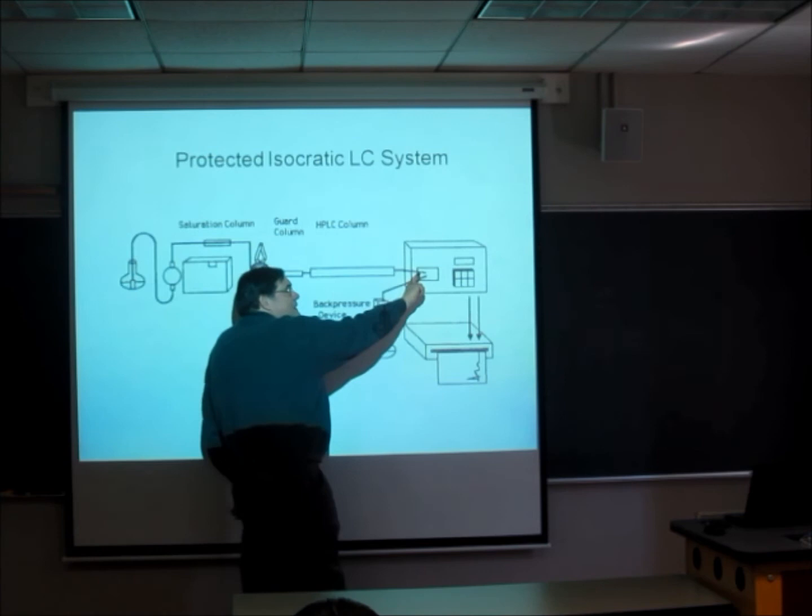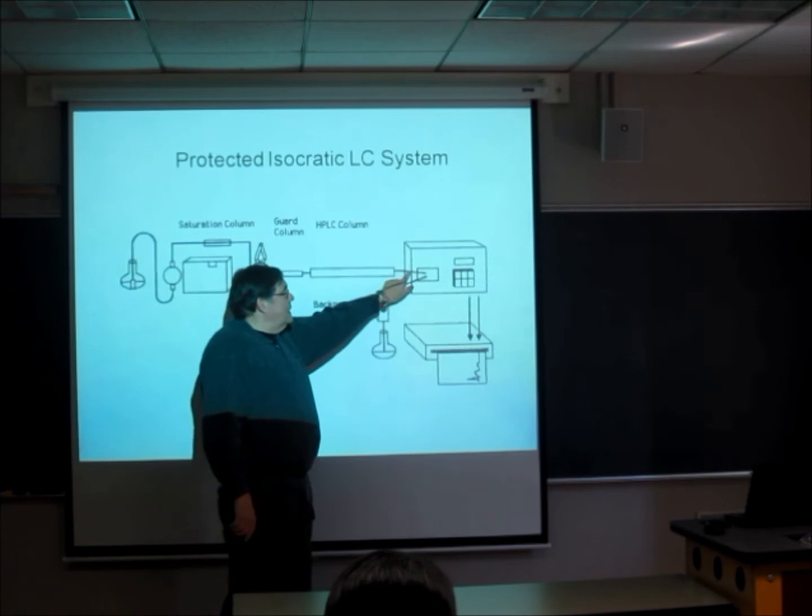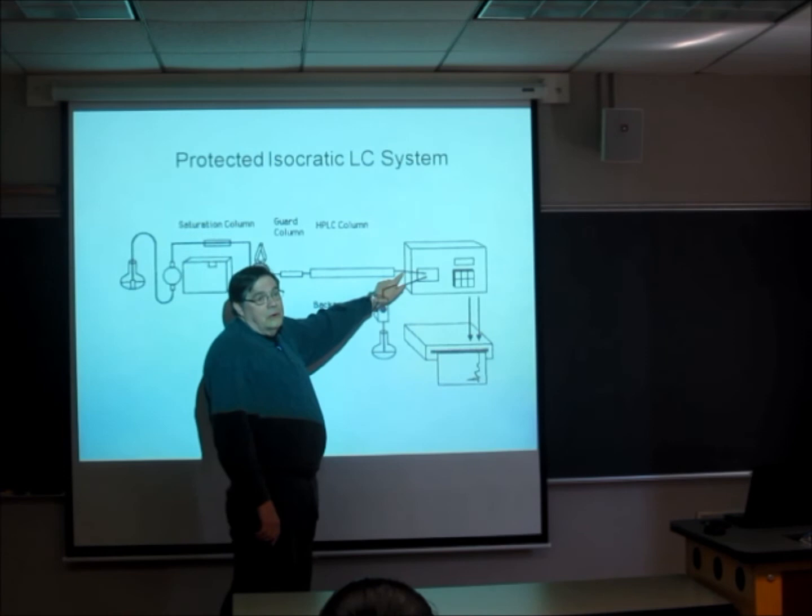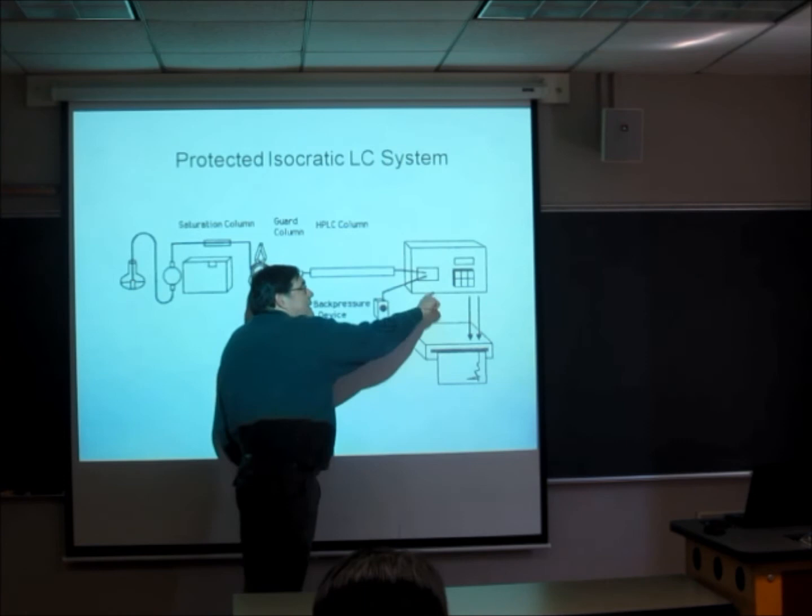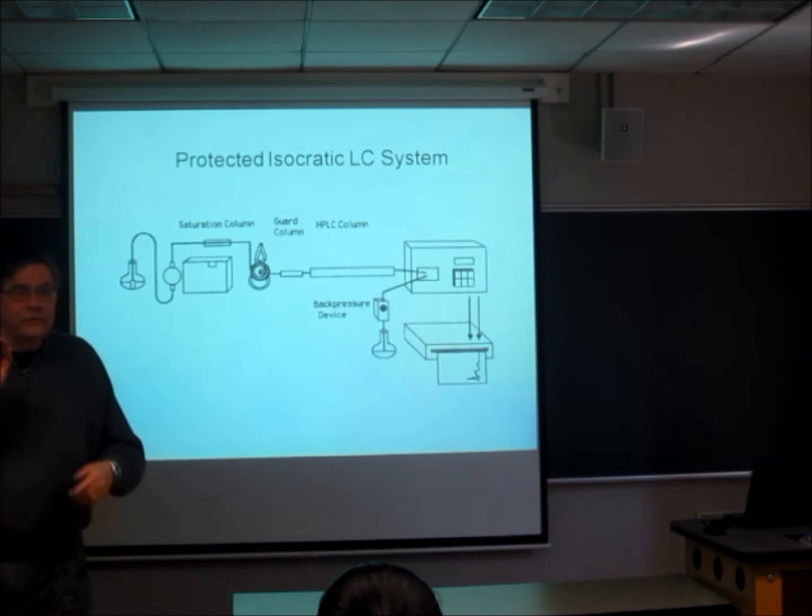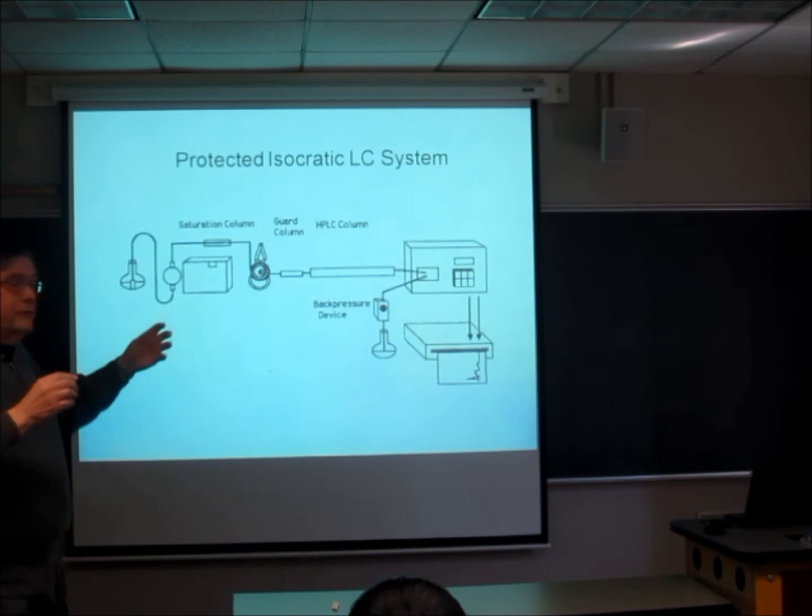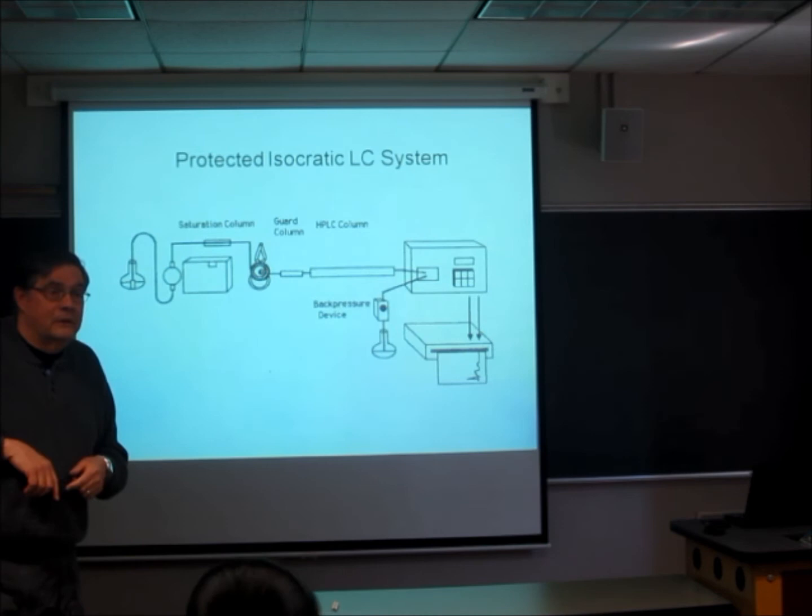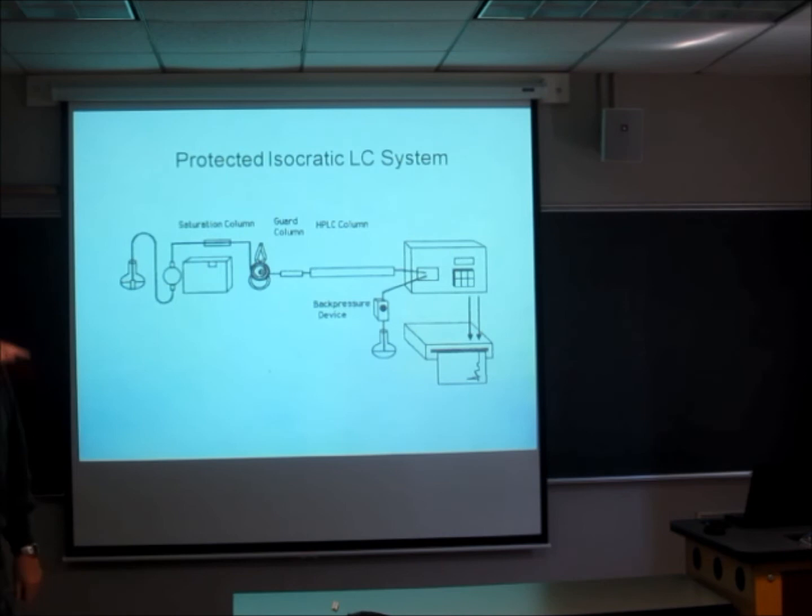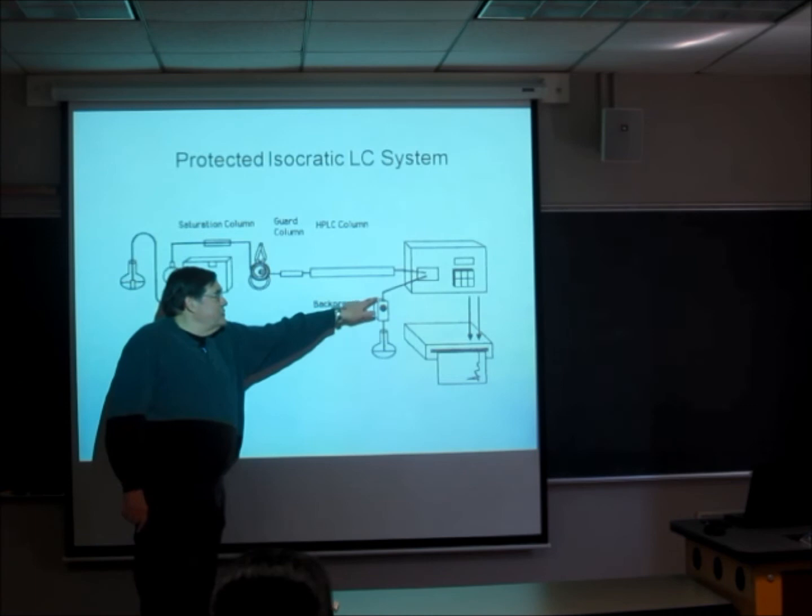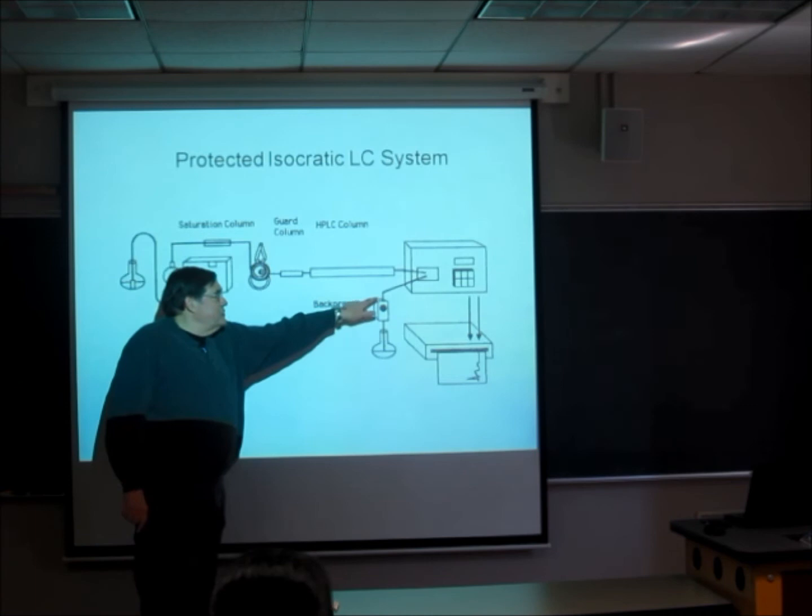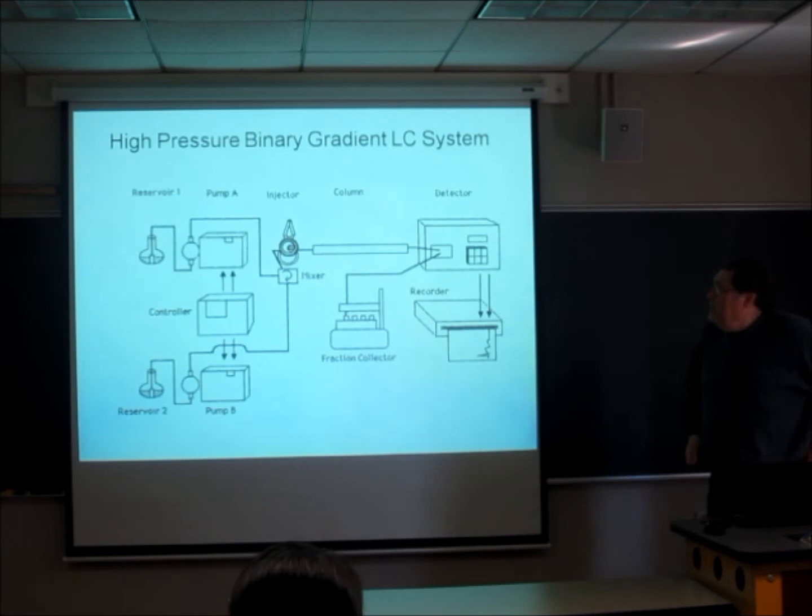So that's a guard column. And then down here, we have to have a back pressure device. If in the detector you've got an optical cell, and you've got a pressure drop from the column down to the outflow here, so this is atmospheric pressure and this is 300, 1,000 psi, something like that, you're going to get an air bubble forming in that optical path. Cavitation occurs. The low pressure will allow the gas that's trapped in the solvent to expand and form a bubble. Then you get a bizarre signal coming out of the detector.